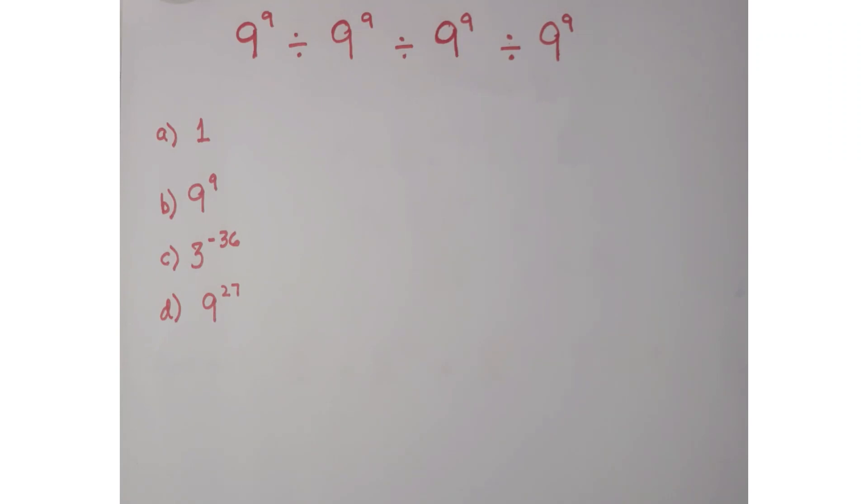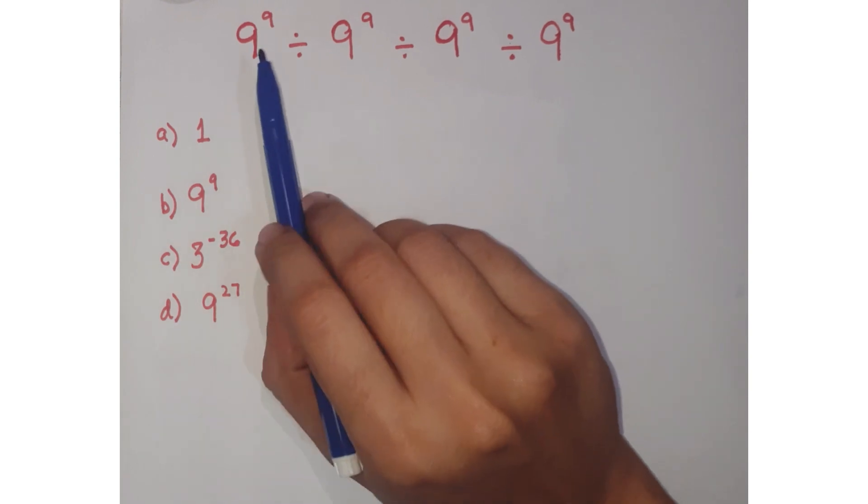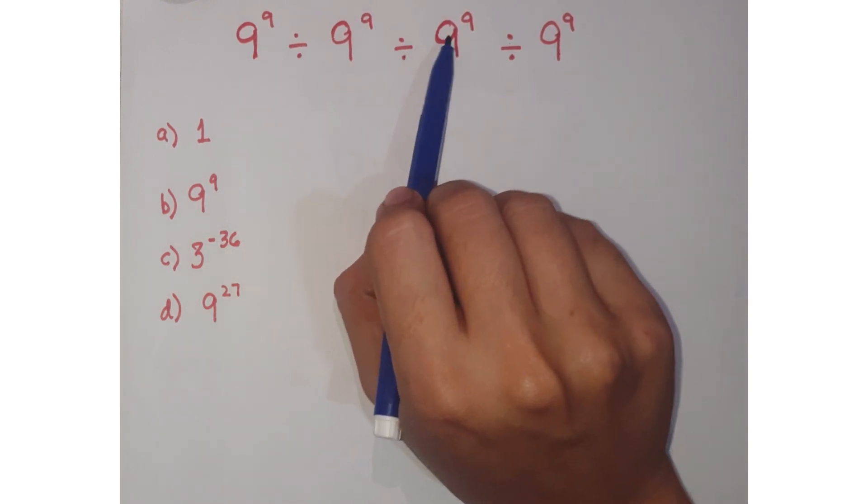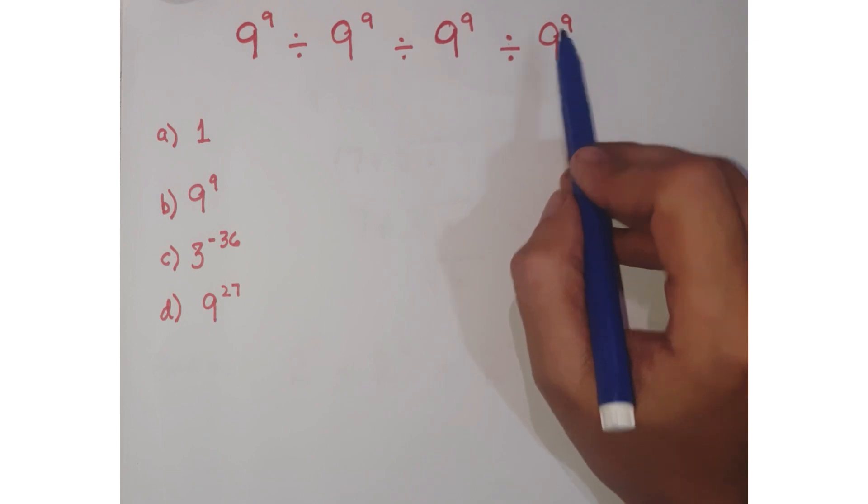Hello friends, look at this question. How are we going to simplify it? The question is 9 to the power 9 divided by 9 to the power 9 divided by 9 to the power 9 divided by 9 to the power 9.